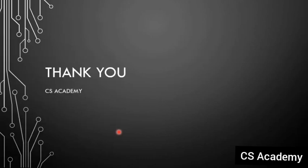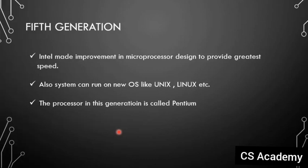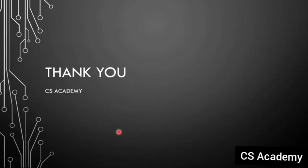So that is all information about the evolution of microprocessor. We have learned how many generations there are: 1st, 2nd, 3rd, 4th, and 5th. In every generation there are changes and improvements. This is a very important question that may appear in your board exam, so be prepared. Please share this video with your friends so they also get this information. Thank you for watching — we will catch you in the next video. Please subscribe to our channel.